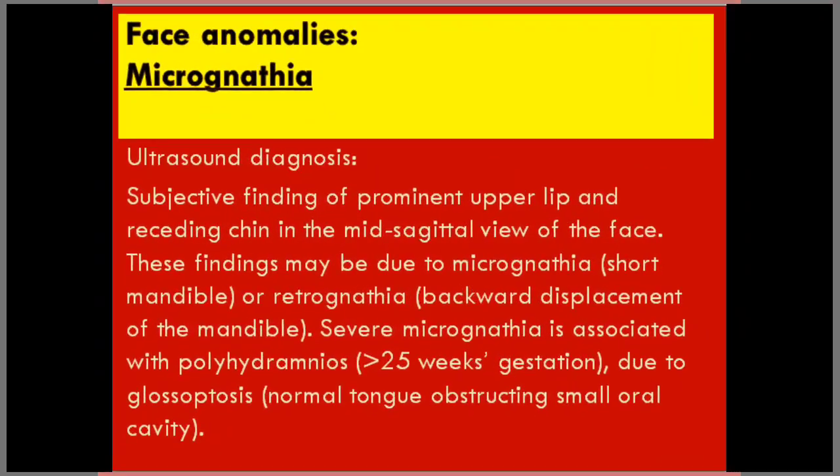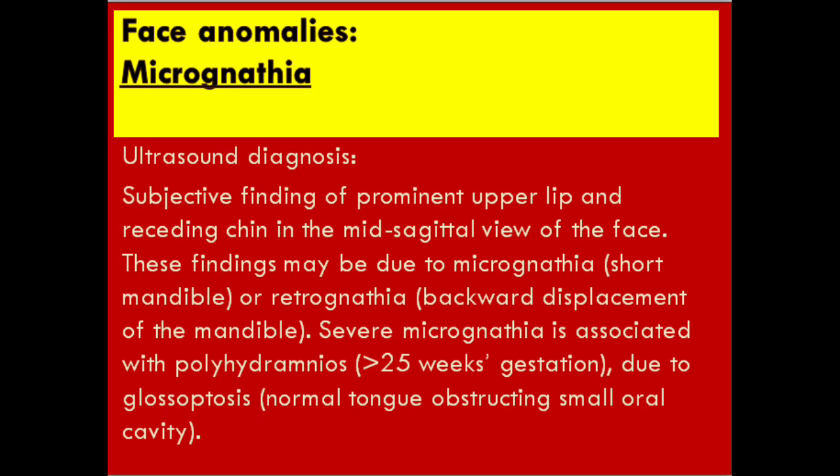The next is micrognathia. Ultrasound diagnosis: subjective finding of a prominent upper lip and receding chin in the mid-sagittal view of the face. These findings may be due to micrognathia — a short mandible — or retrognathia — backward displacement of the mandible. Severe micrognathia is associated with polyhydramnios after 25 weeks gestation, due to glossoptosis, where the normal tongue obstructs the small oral cavity.